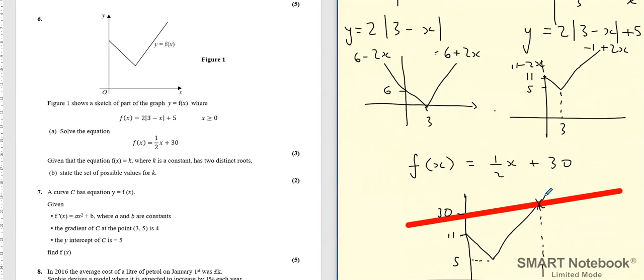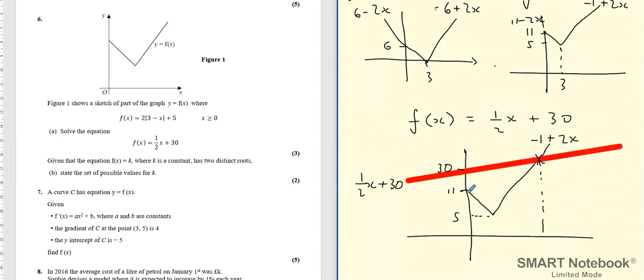So what we realized, the parts of the line which meet on f(x), this part of the line has equation minus 1 plus 2x, and obviously the equation of this red line is a half x plus 30 and they only meet once because before x equals zero f(x) does not exist.